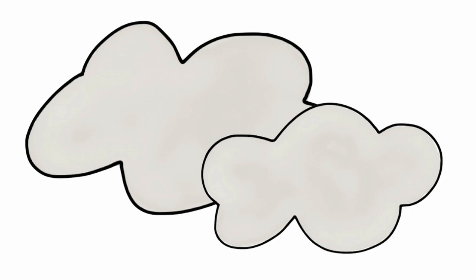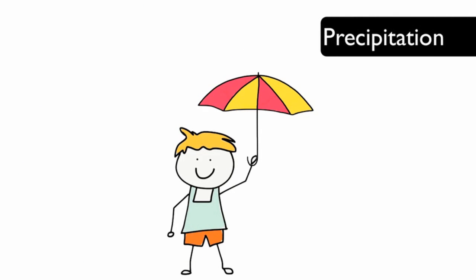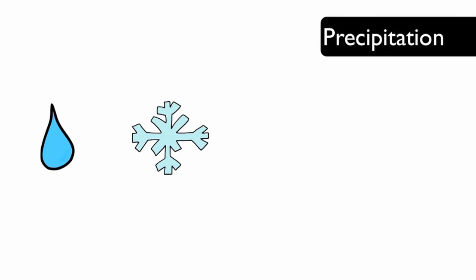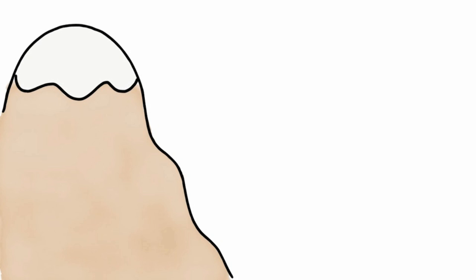When clouds have too much water to hold, the water falls back to Earth. Precipitation is any form of water falling to Earth. Precipitation can be rain, snow, sleet, or hail. Precipitation fills the lakes, rivers, and streams.